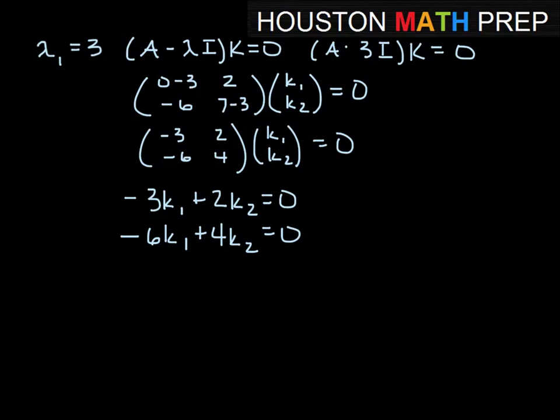So we get -3 times K₁ plus 2 times K₂ equals 0, and we also get -6K₁ plus 4K₂ equal to 0. The second equation is 2 times the first equation, so they're really the same information. So I'll just rearrange the top one here. This would be 2K₂ equals 3K₁.